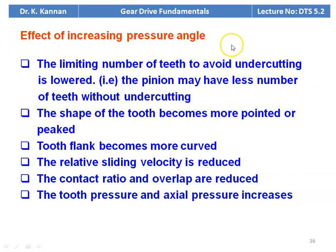The effect of increasing the pressure angle: the limiting number of teeth to avoid undercutting is lowered — the pinion may have fewer teeth without undercutting. The shape of the tooth becomes more pointed or peaked. The tooth flank becomes more curved, relative sliding velocity is reduced. The contact ratio and the overlap are reduced. The tooth pressure and the axle pressure increase. These are all the effects of increasing the pressure angle.